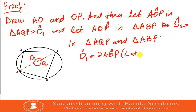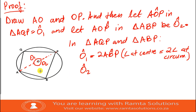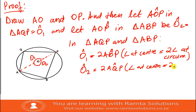Now let's look at angle O2. Angle O2 is equal to two times angle AQP. Again, the reason is: the angle at the centre equals two times the angle at the circumference.